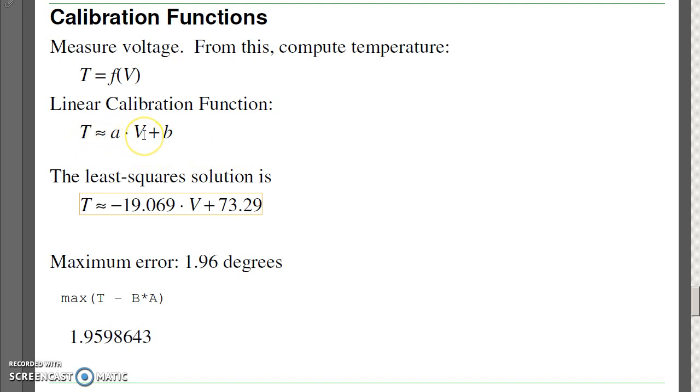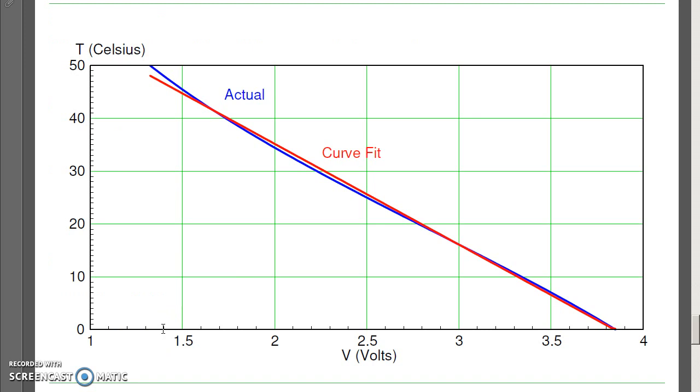If I use the least-squares curve fit, which is described in the lecture notes, what I'll wind up with is the following curve fit. Temperature is roughly minus 19 times voltage, plus 73. And if I take the difference between the actual temperature and my curve fit, this is accurate, worst-case, within 1.9 degrees Celsius.